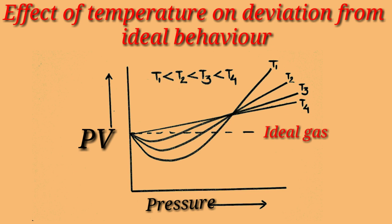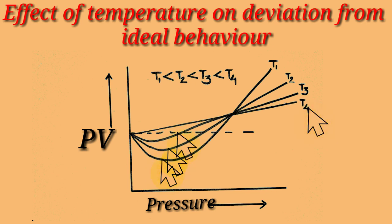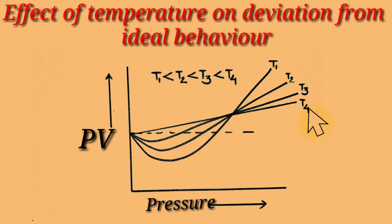Regarding the effect of temperature on deviation from ideal behavior: when PV values for nitrogen are plotted against pressure at different temperatures T1, T2, T3, and T4, it is seen that as temperature is raised, the dip in the curve becomes smaller and smaller, and at a particular temperature the curve appears almost horizontal, equal to the dotted line for ideal gas.